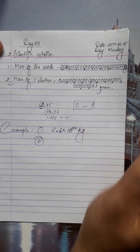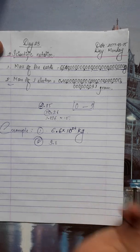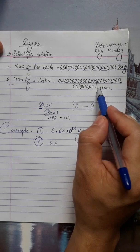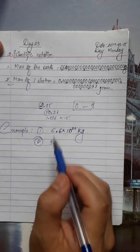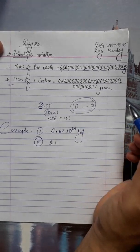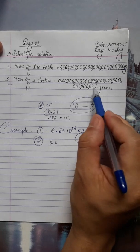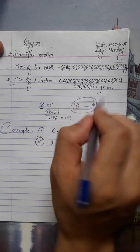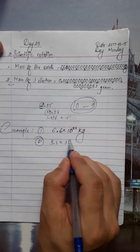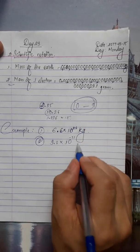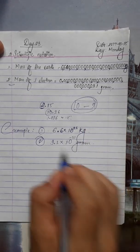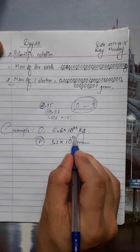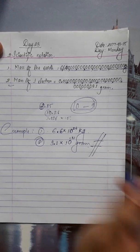We count 31 steps — the decimal is placed between 9 and 1. Moving the decimal 31 steps to the right gives a negative power: 10⁻³¹. This is called scientific notation.